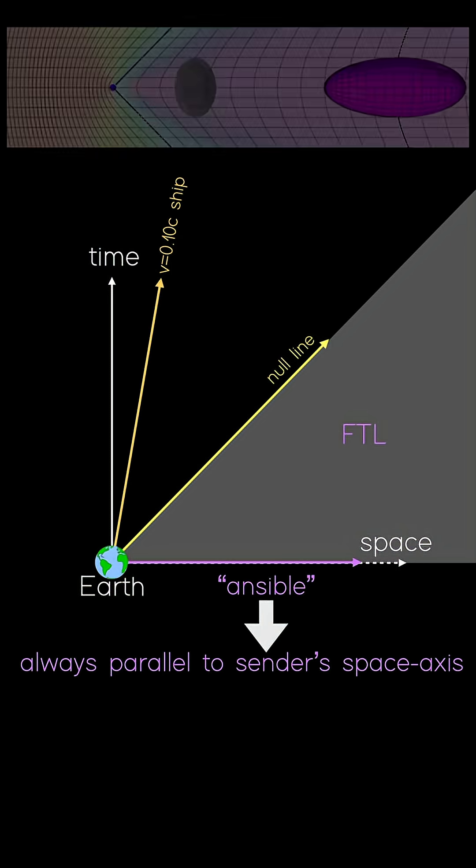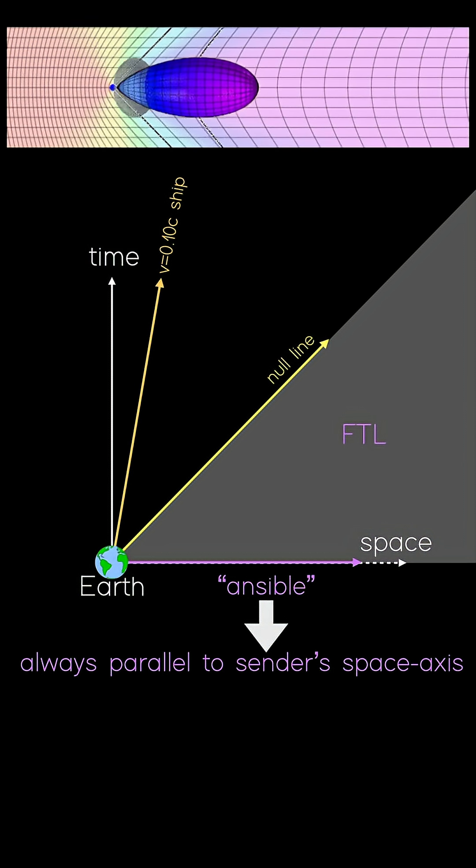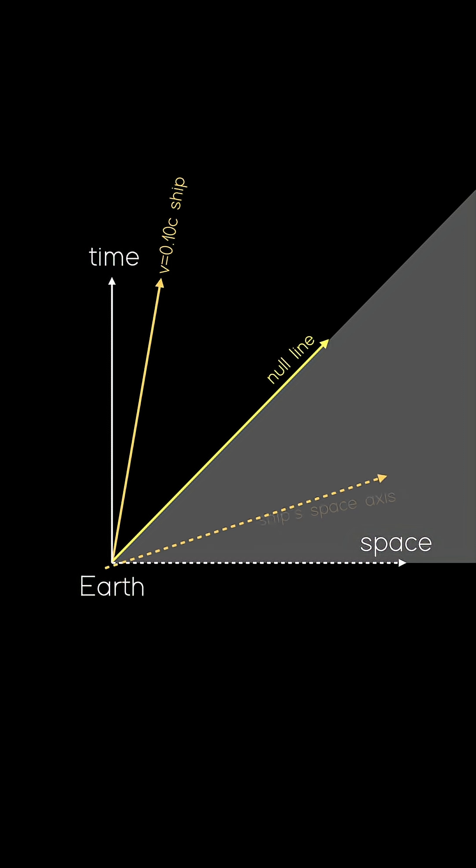We need to know one last rule. Space and time distort in relativity. Not everyone agrees on where these axes live. The new axes can be calculated using so-called Lorenz transformations, but the end result is that the ship's space axis will be mirrored about the null line.